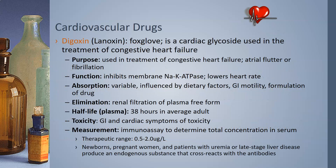Starting with digoxin, also known as Lanoxin — it is from foxglove, it is a cardiac glycoside, and it's used mostly in the treatment of congestive heart failure. It can also be used in the treatment of atrial flutter or atrial fibrillation.